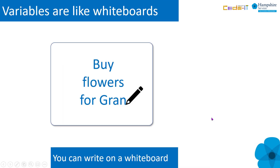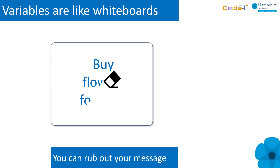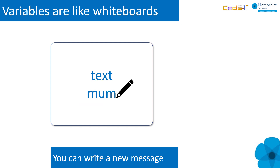The most useful variable analogy is that of a whiteboard. You can write data onto a whiteboard — it could be any type of data, number or text. You can remove this data by rubbing it out, and we can do the same thing with our digital variables by deleting the value of the variable. We can write a new message onto a whiteboard, and we can assign new data to a variable as well.